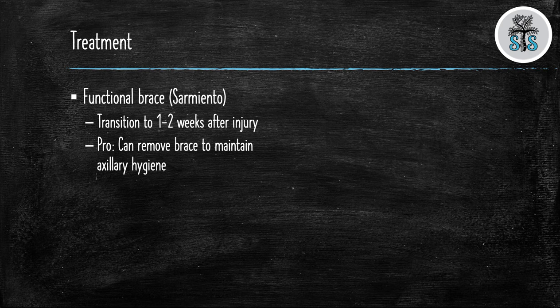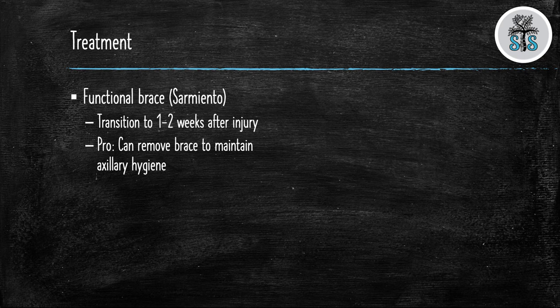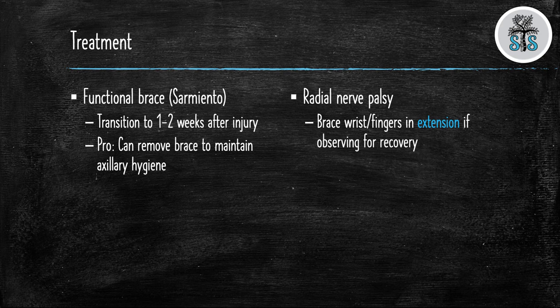After one or two weeks from the time of injury you can transition the patient to a sarmanto brace which will look like a clam shell. It surrounds the arm and it can be taken off if needed to perform hygiene. This brace allows for shoulder and elbow range of motion to decrease joint stiffness. If the patient has a radial nerve palsy and observation is chosen you will need to brace the patient's wrist and fingers into extension to prevent flexion contractures from forming.